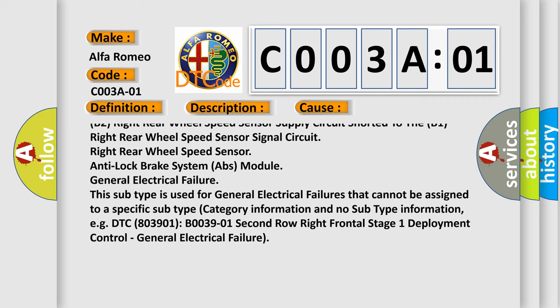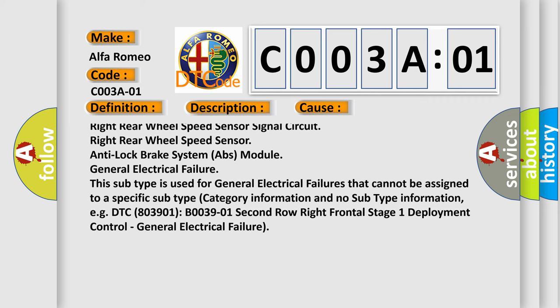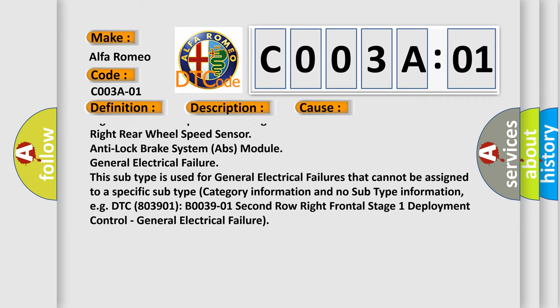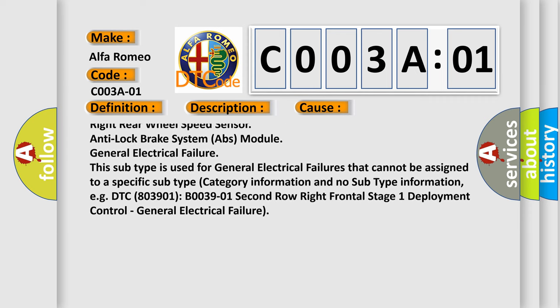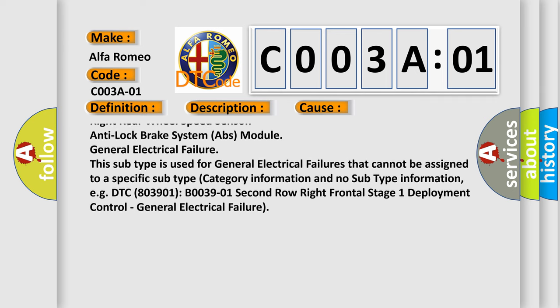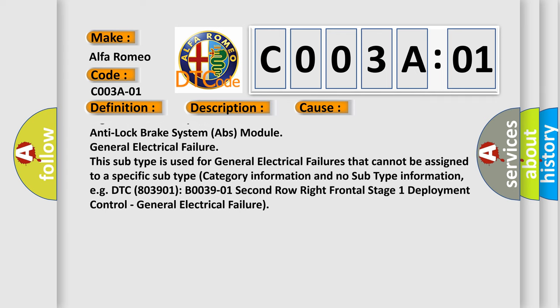Anti-lock brake system ABS module general electrical failure. This subtype is used for general electrical failures that cannot be assigned to a specific subtype category information and no subtype information, for example, DTC 803901 B003901 2nd row right frontal stage 1 deployment control general electrical failure.